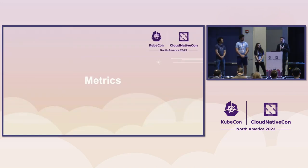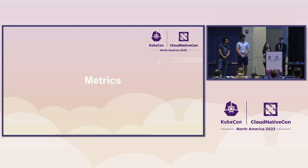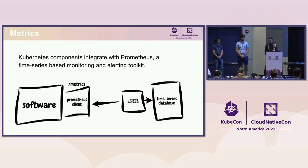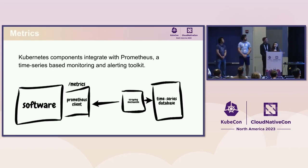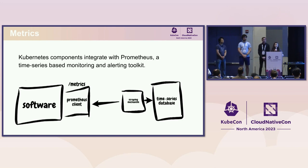I'll let Richa walk you through the metrics. So let's talk about metrics in Kubernetes. Kubernetes uses Prometheus to instrument a ton of metrics that can be consumed by software that understands the Prometheus metric format. These software apps can then develop monitoring in the form of dashboards and alerts on top of these consumed metrics to monitor Kubernetes workloads.